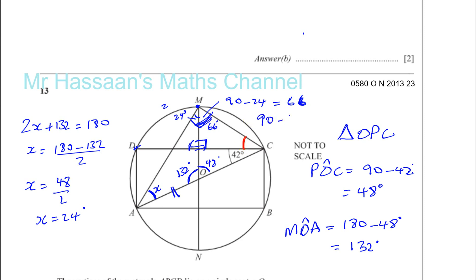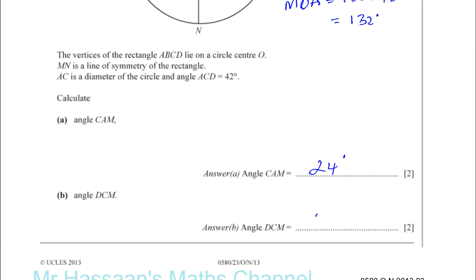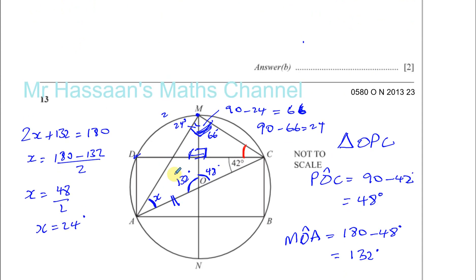Another approach: angle DCM stands on the same arc as angle DAM. We can find angle DAM because we know this is 90 degrees, this angle is 24, and since DC is a parallel line, this part is 42. So DAM = 42 + 24 = 66, and 90 minus 66 = 24 degrees. Since DCM stands on the same arc as DAM, DCM is also 24 degrees. There are lots of ways to reach this answer.